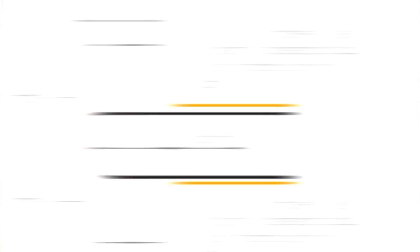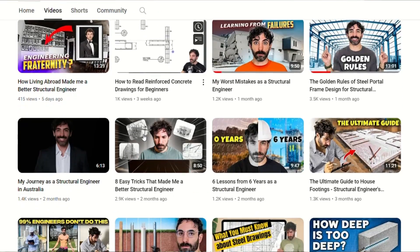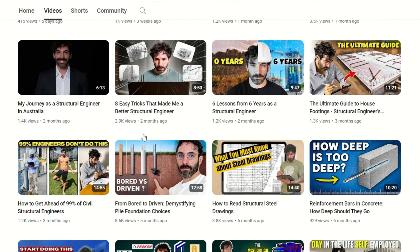Here's one last thing to keep in mind: when the building starts shaking, bending moments will also change and result in extra internal forces that must be considered. You might have worked out the reinforcement embedment of a beam into a column, but in an earthquake event, the reversal moments might require a longer development length. If you don't know what development length is, watch the video on this channel called 'Reinforcement Bars in Concrete — How Deep Should They Go?'